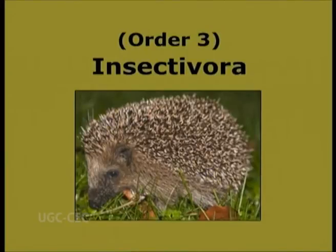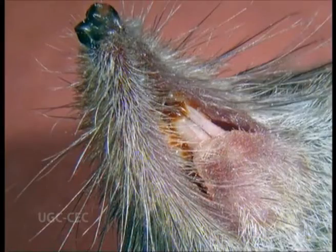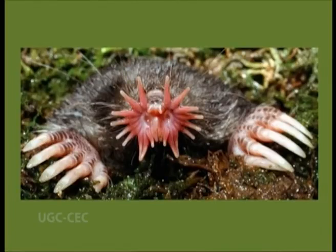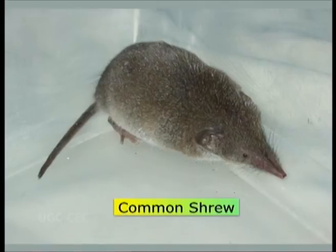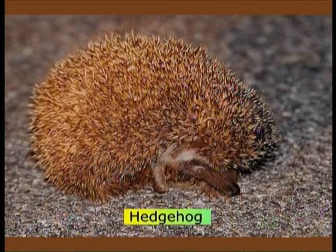Order 3: Insectivora. Insectum meaning insect, Vorare meaning to eat — animals which eat insects. These are small mammals with long pointed snout. Their feet are plantigrade, usually with claws present. They have molars with pointed peg-like cusps for insect feeding. Examples are mole, common shrew, solonodon and hedgehog.